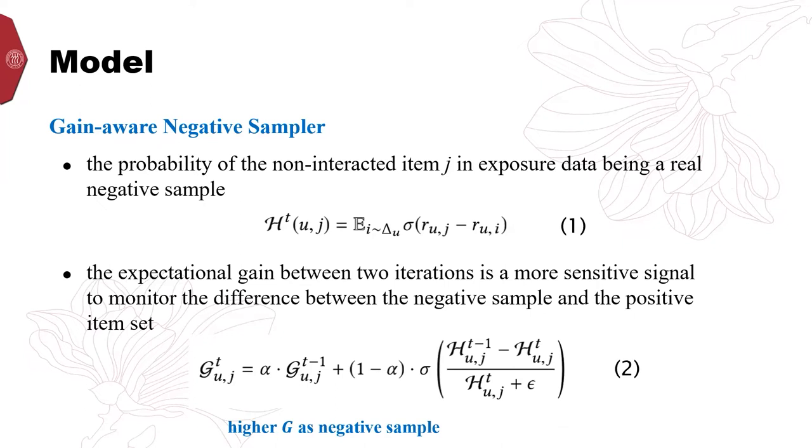Here, alpha is a smoothing hyperparameter to make the training stable. According to the gain tuning sampler, the unabsorbed interactions of a given user with higher G are selected as the negative samples for model's optimization. This is because the false negative samples usually have larger G than the true negative samples.